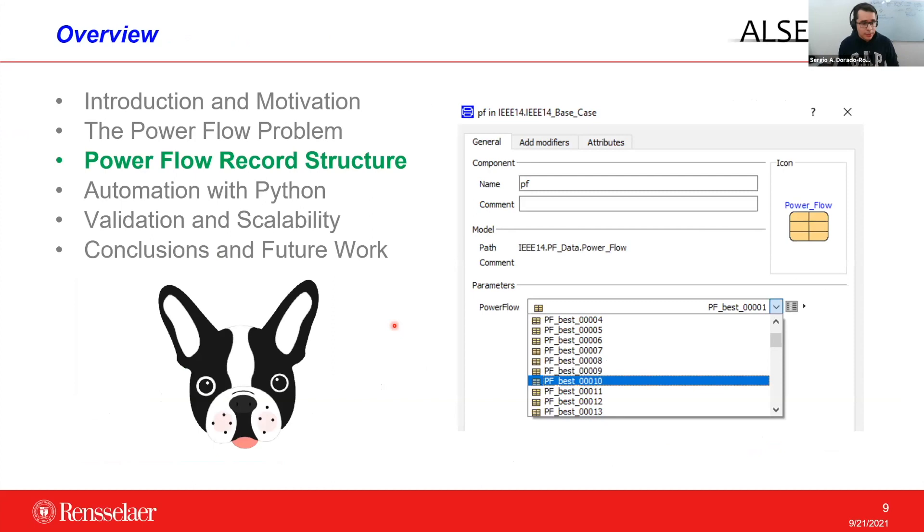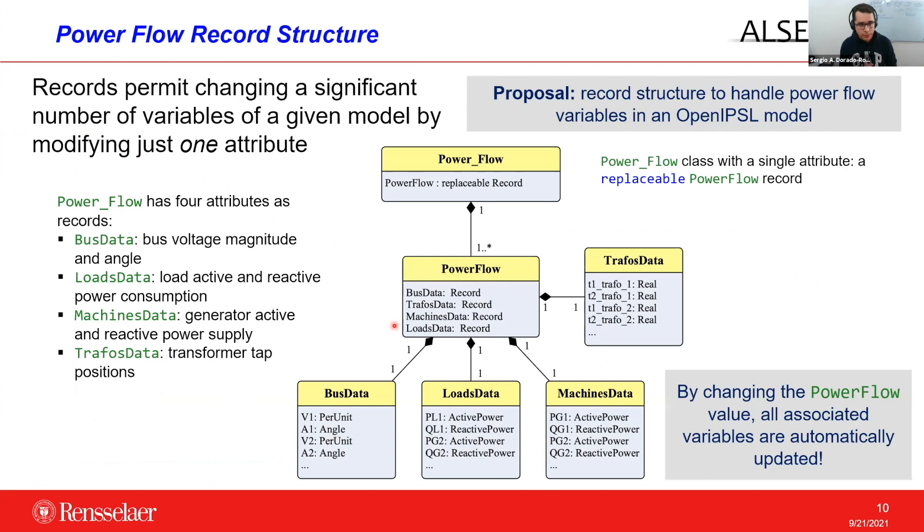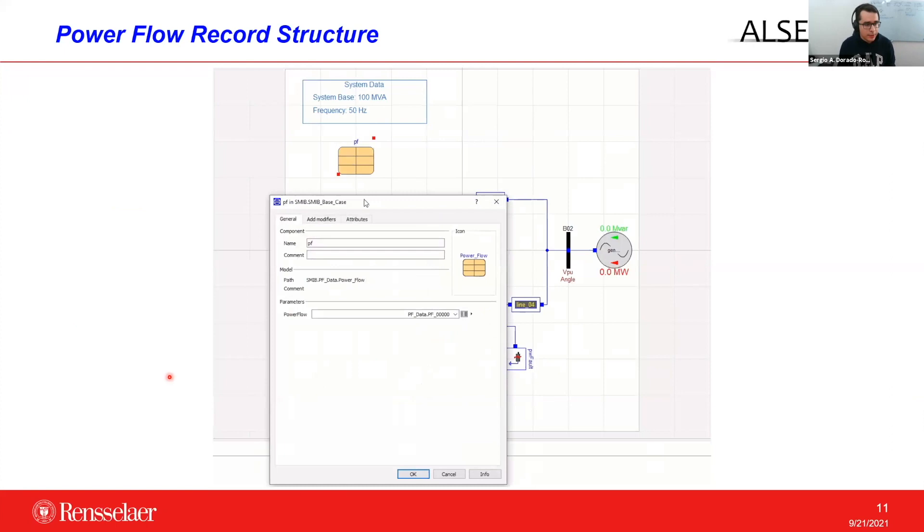After this brief description, let's see how we design the power flow record structure. Basically, in a power flow result, we have a lot of variables, and the way in which we wanted to handle them was through a single attribute of the Modelica model, and that attribute is itself a record. This is more or less how the class power flow looks like. In a nutshell, the power flow is conceived as a replaceable record, which has four records as attributes: one record for the bus data, another one for the loads data, another one for the machines, and the last one for the transformer results. And the main idea is that if we want to change the power flow condition of the model, we just have to change this replaceable record here.